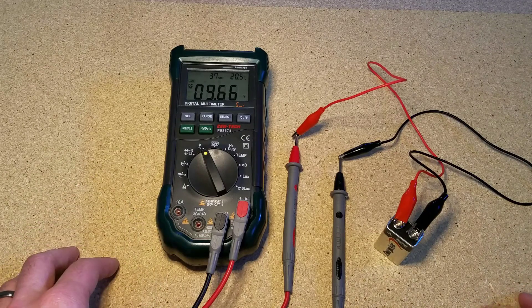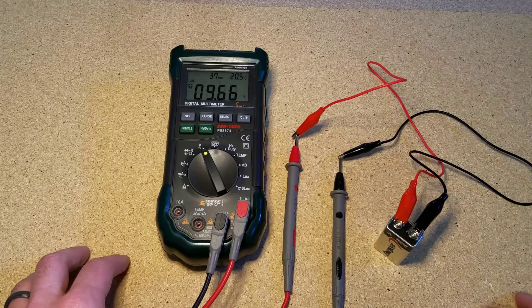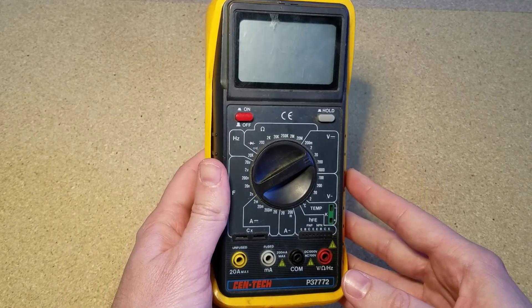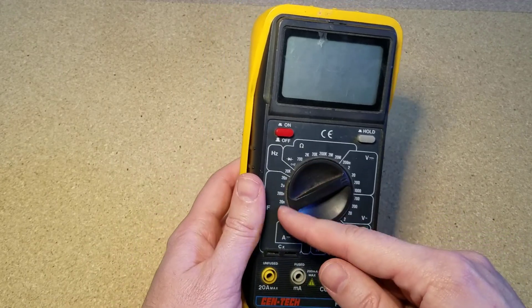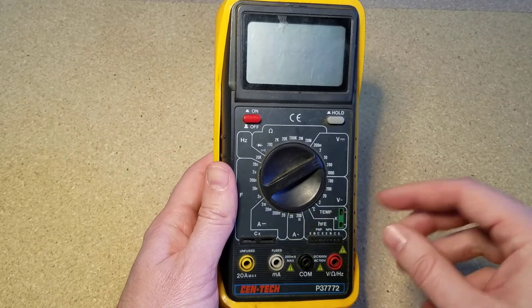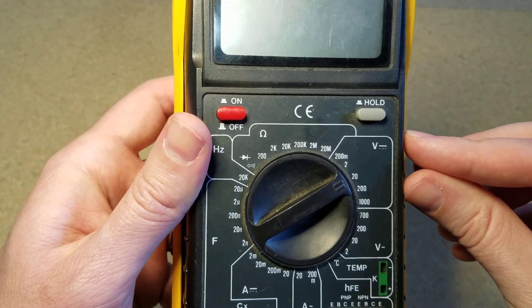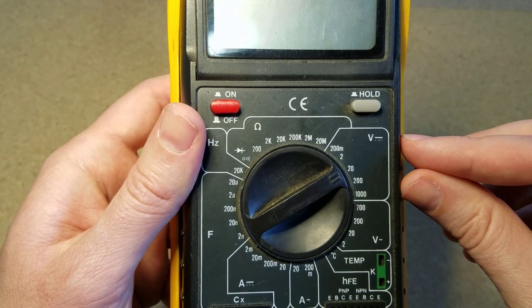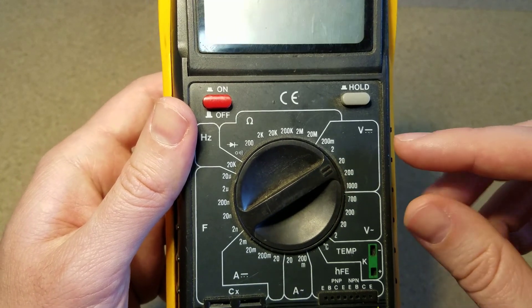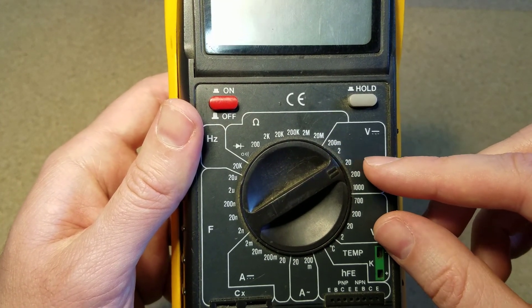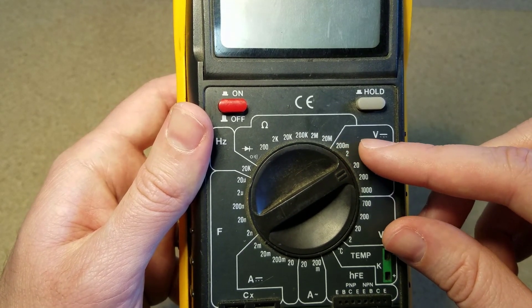Now instead of having an auto-ranging meter like this one, you might have what's called a manual ranging meter. So let's take a look at that and see what you might need to do different. This is an example of a manual ranging meter and you'll probably already notice that it's got a lot more going on around the dial than the auto-ranging meter did. For instance, it's got two separate segments here for measuring either DC voltage or AC voltage, and within each one of those segments it's got a bunch of numbers.